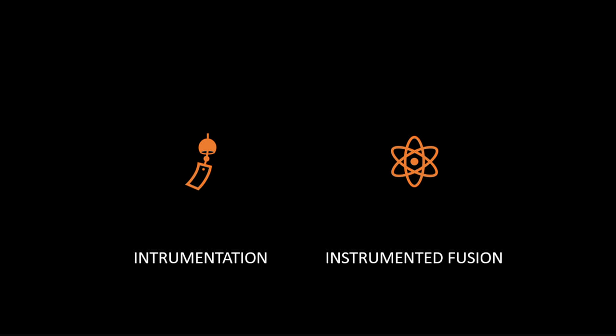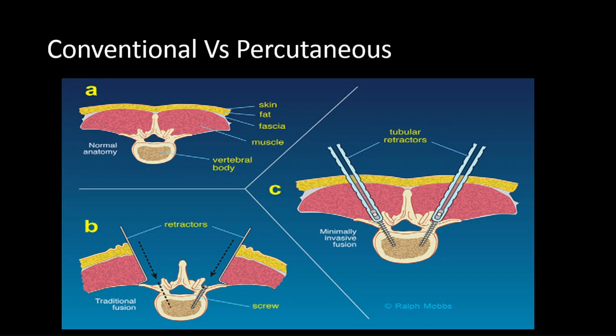Instrumented fusion means we put in screws along with some kind of fusion - which could be a posterior fusion using bone grafts or some other method - so that the segment becomes immobile. The main difference between open and percutaneous procedures is between muscle splitting and muscle erasure. In open surgery, because of the huge amount of muscle stripping, everything increases - the pain, blood loss, and other complications related to stripping. In the percutaneous approach, we have a splitting incision, going in directly and avoiding all the drawbacks of stripping.